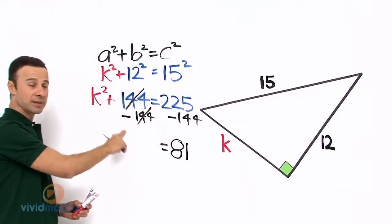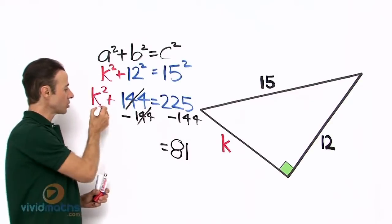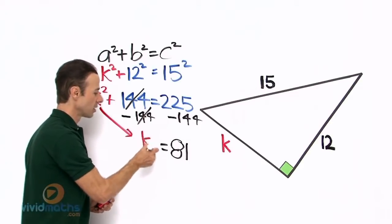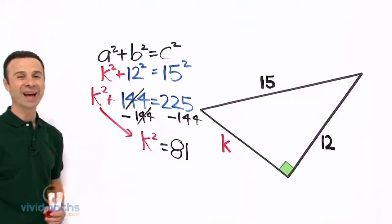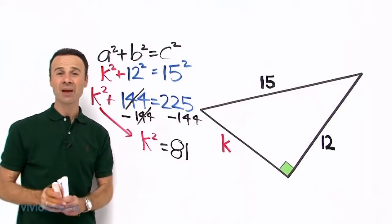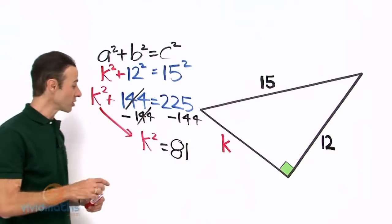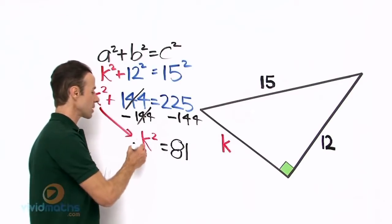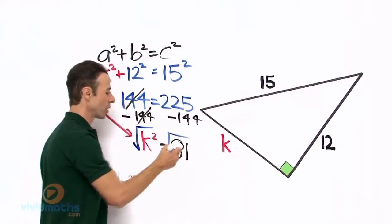Now let's bring K² down here, so that's K² = 81. Remember, the final step in Pythagorean theorem is to take the square root of both sides, so let's do that - square root here and square root there.